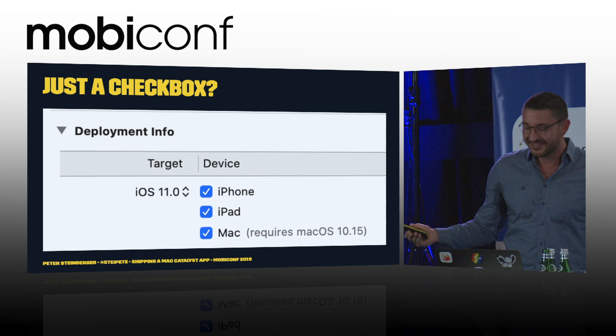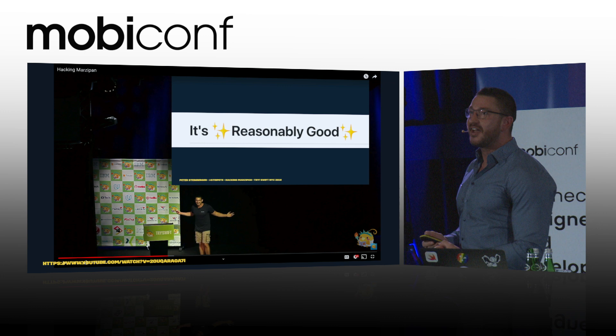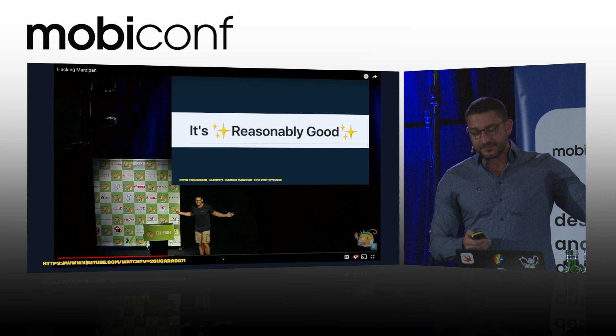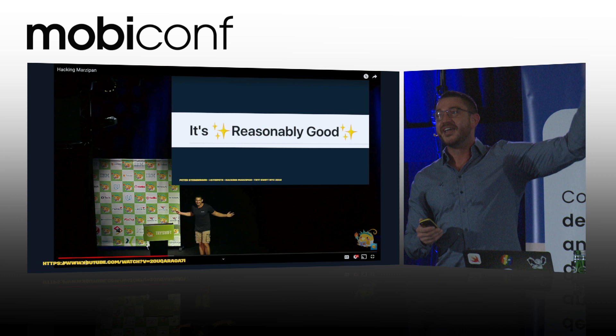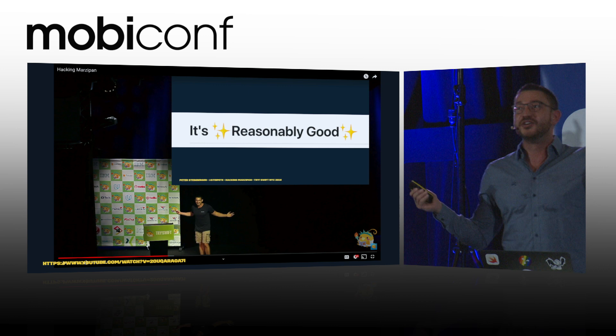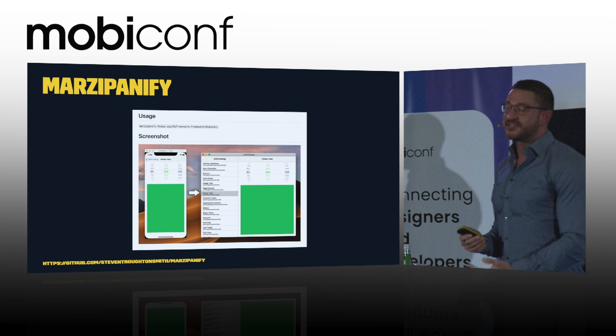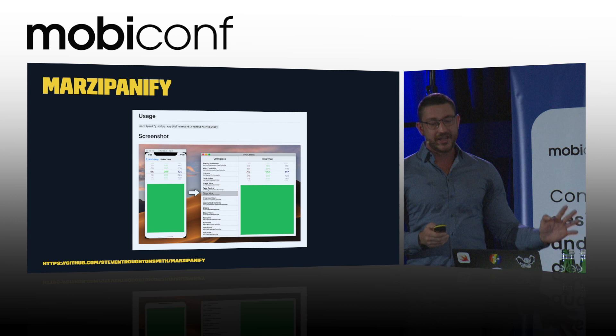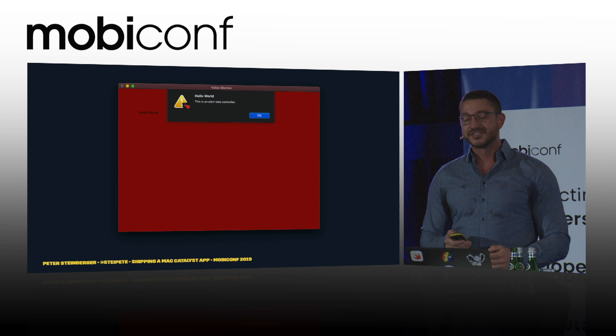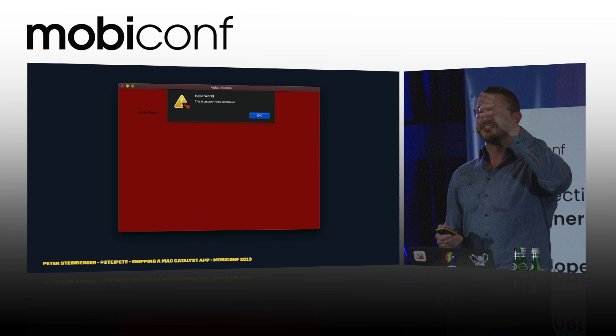It's so interesting that I gave a talk about Marzipan last year at Try! Swift in New York. Back then, things were quite a bit rougher — there was no checkbox yet. There was a particularly awesome screenshot of somebody who took React Native and ported it with Marzipan to the Mac. The best hack back then was Marzipanify from Steven Smith, who is still very active talking about Catalyst. An earlier hack was taking Voice Memos — which is a Catalyst app — loading it, and then loading your own code to basically override what was in there. Weird, but it worked.